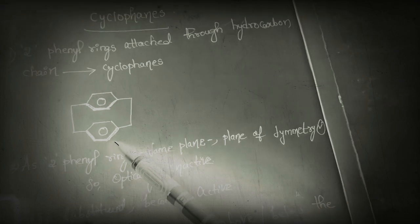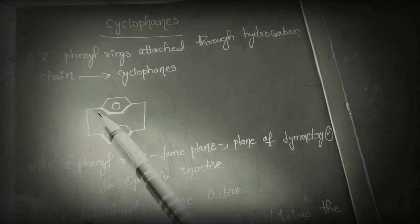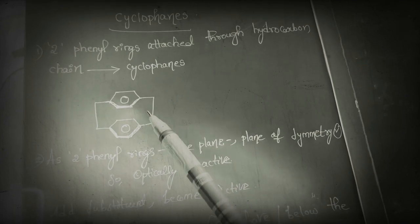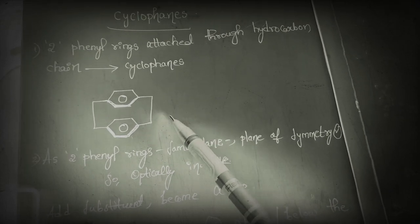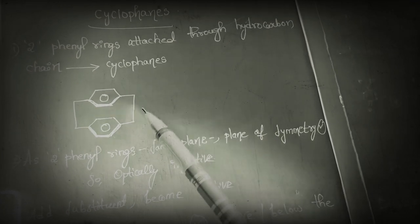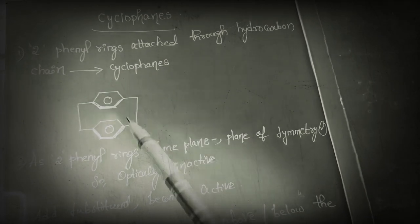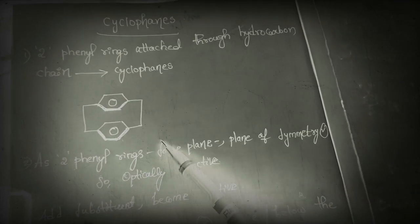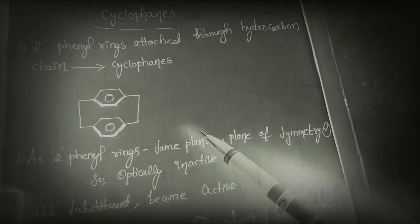If we observe this cyclophane, we will come to know that these two rings are in the same plane, meaning a plane of symmetry is present. We know that if a plane of symmetry is present, they are optically inactive. So this cyclophane is optically inactive.